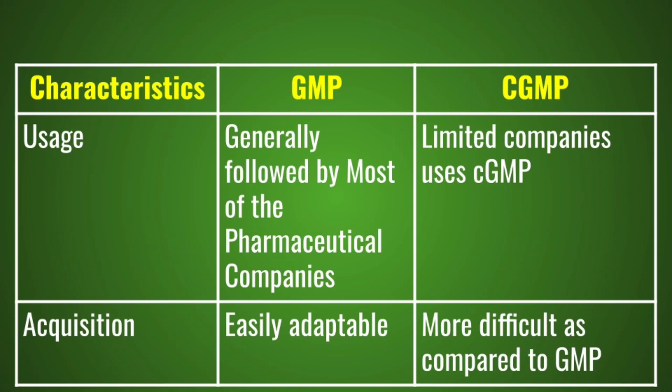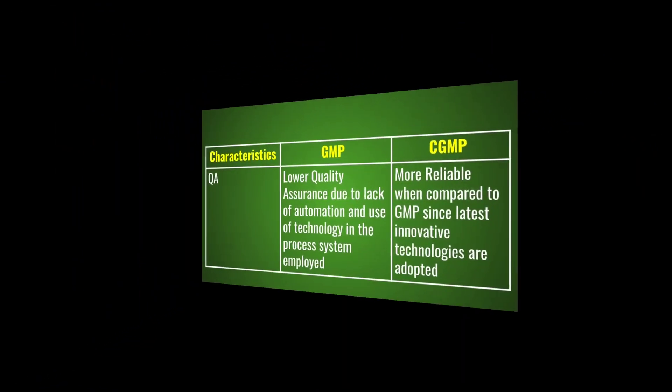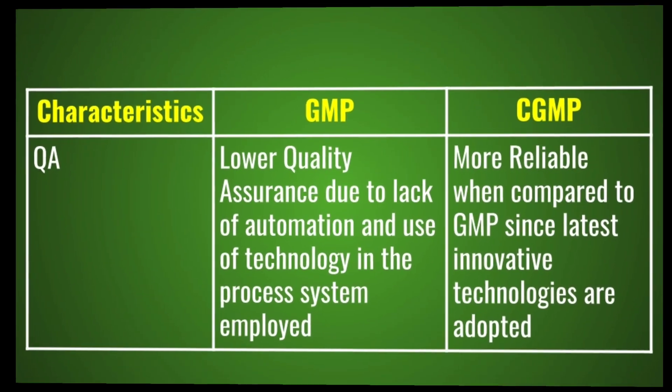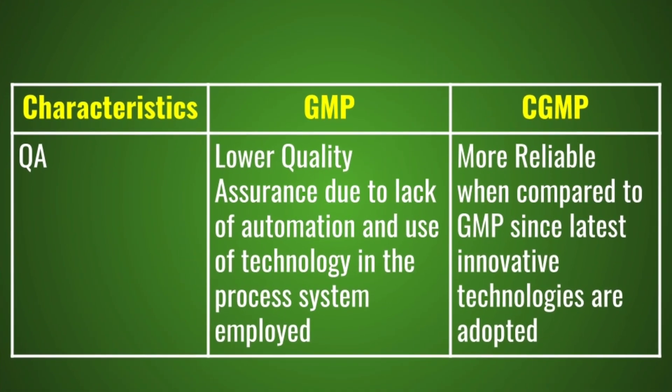GMP is easily adaptable, whereas CGMP is more difficult compared to GMP. GMP results in lower quality due to lack of automation and use of technology in the process system employed. CGMP is more reliable when compared to GMP since the latest innovative technologies are adopted.